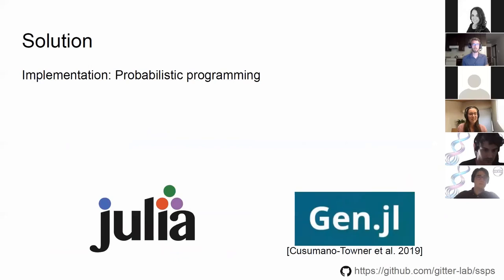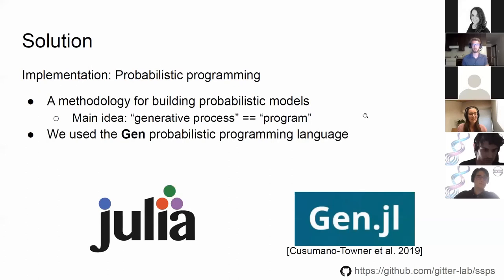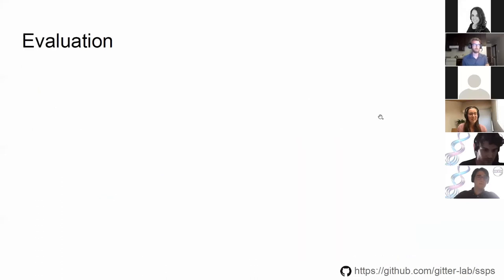We implemented SSPS in Julia as a probabilistic program. Probabilistic programming is a methodology for building probabilistic models — you can think of a generative process as a sequence of operations on random variables, or equivalently as a program in a probabilistic programming language. For SSPS we used the Gen probabilistic programming language, available as a Julia package. Our full code is on GitHub and includes a Snakemake workflow for reproducing all results.